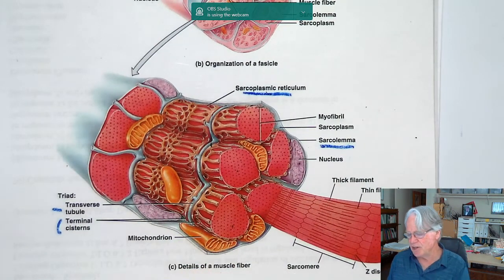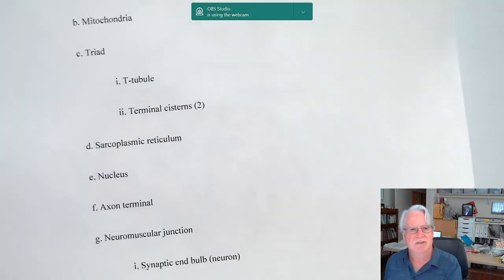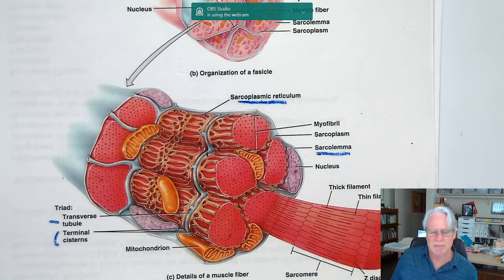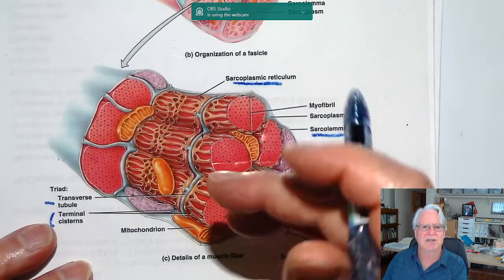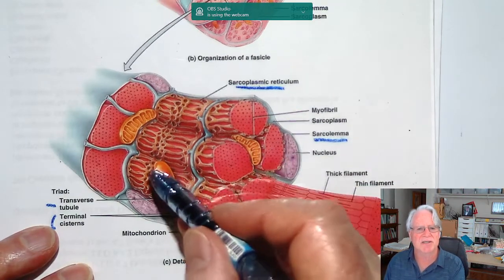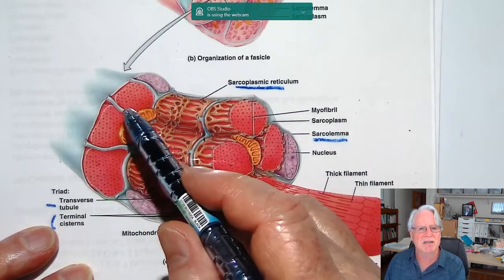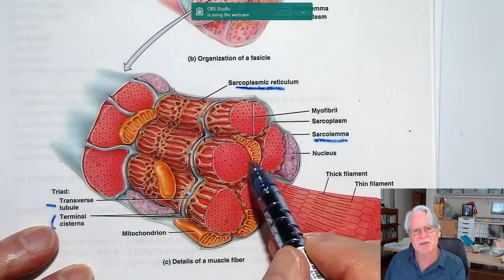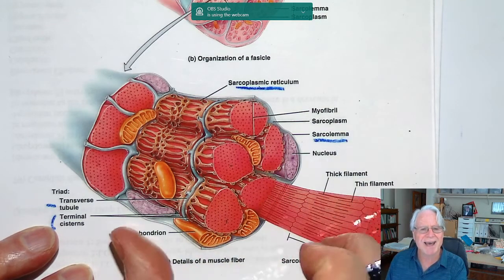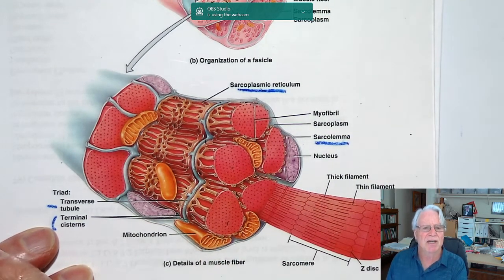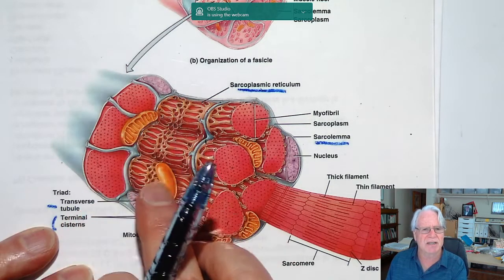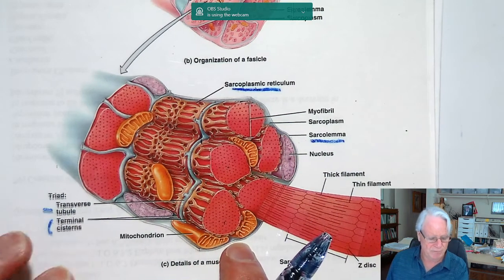The next structure on the list is mitochondria. There are a lot of mitochondria inside a skeletal muscle cell. Why do we have so many? Because the act of muscle contraction requires a lot of energy, and to generate that energy we need a lot of mitochondria.